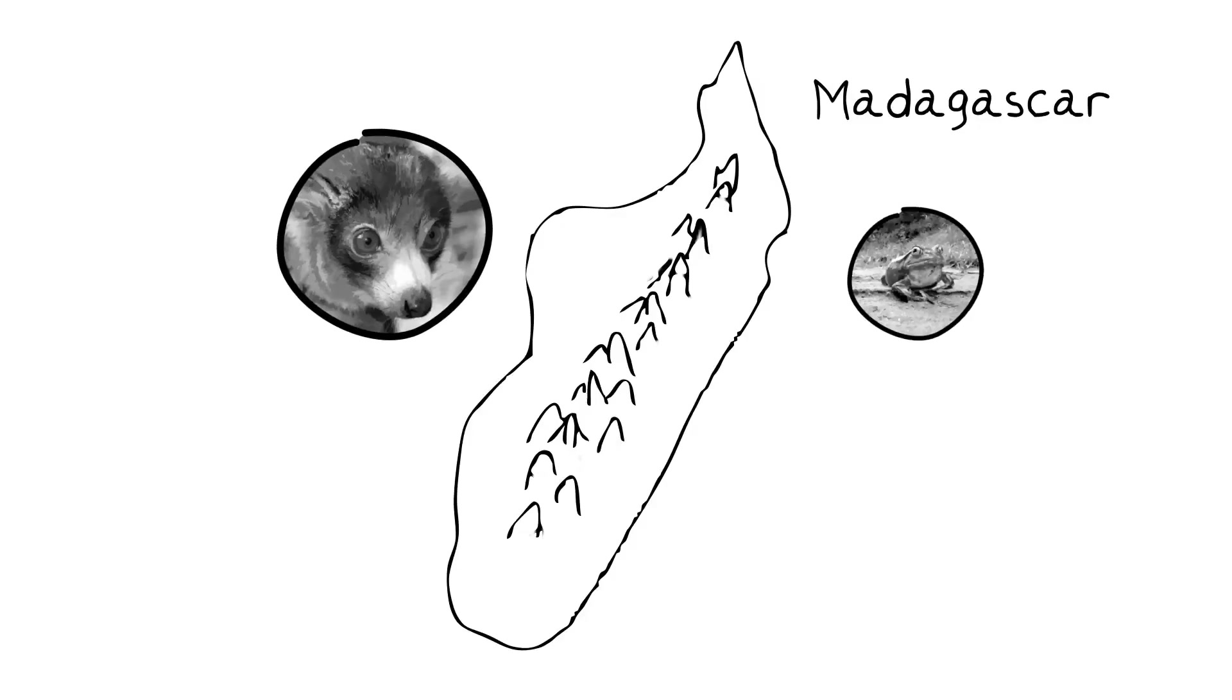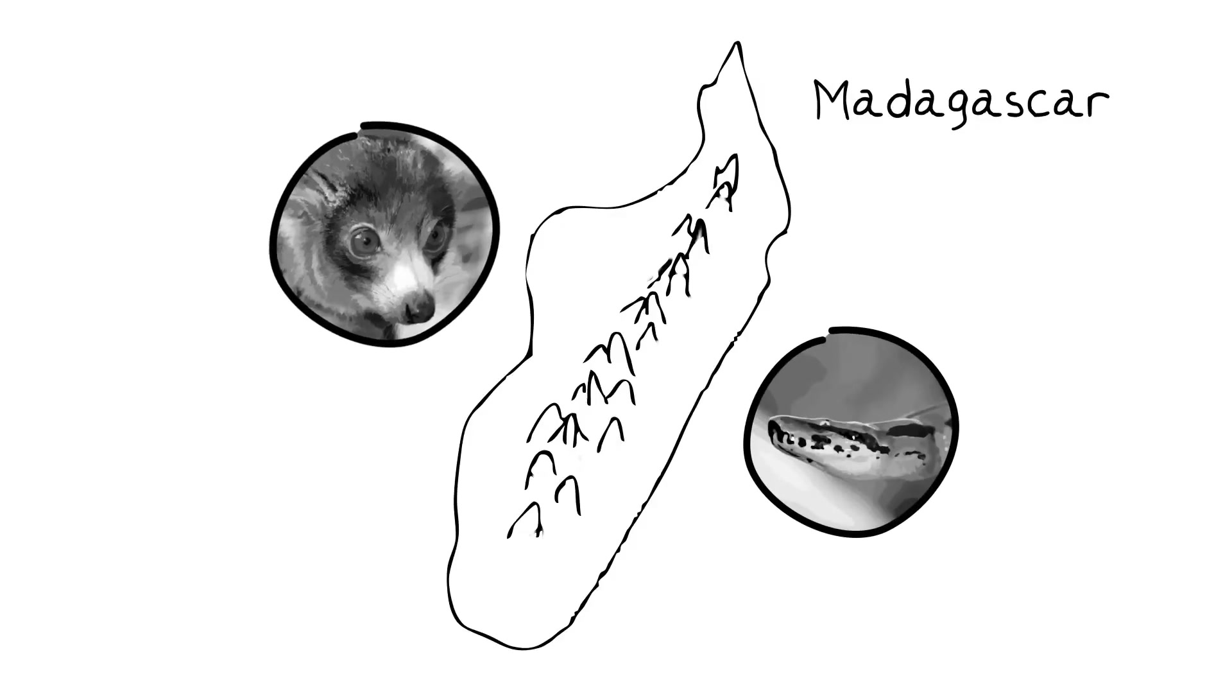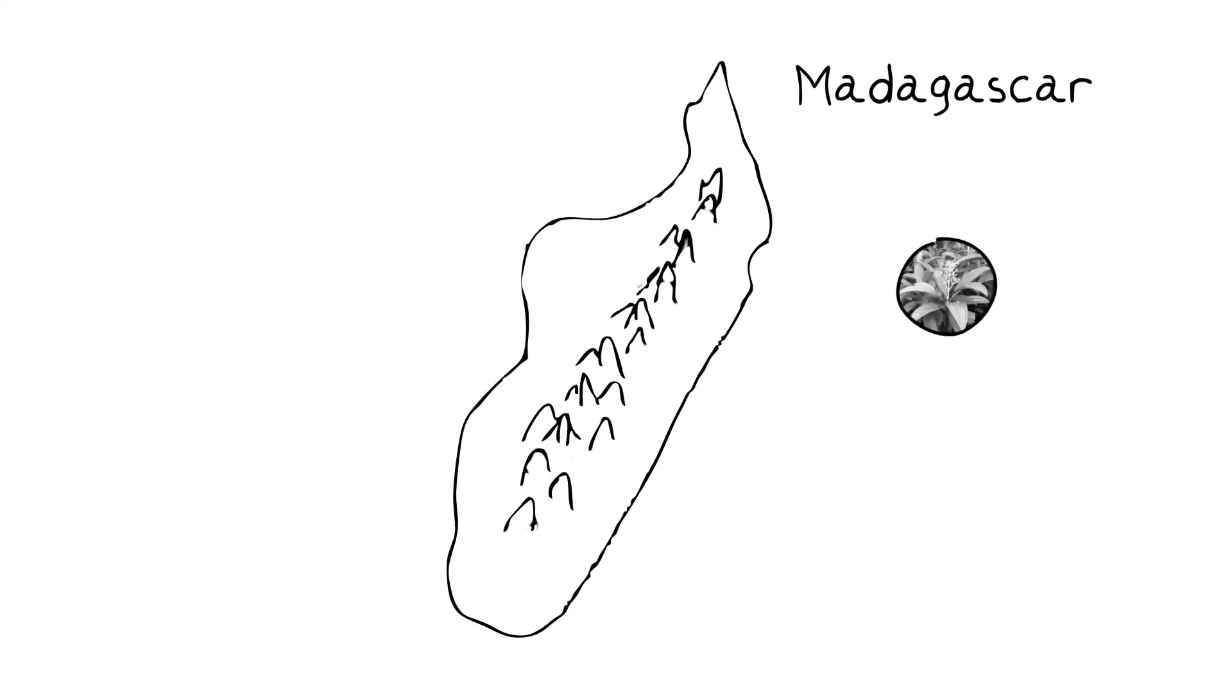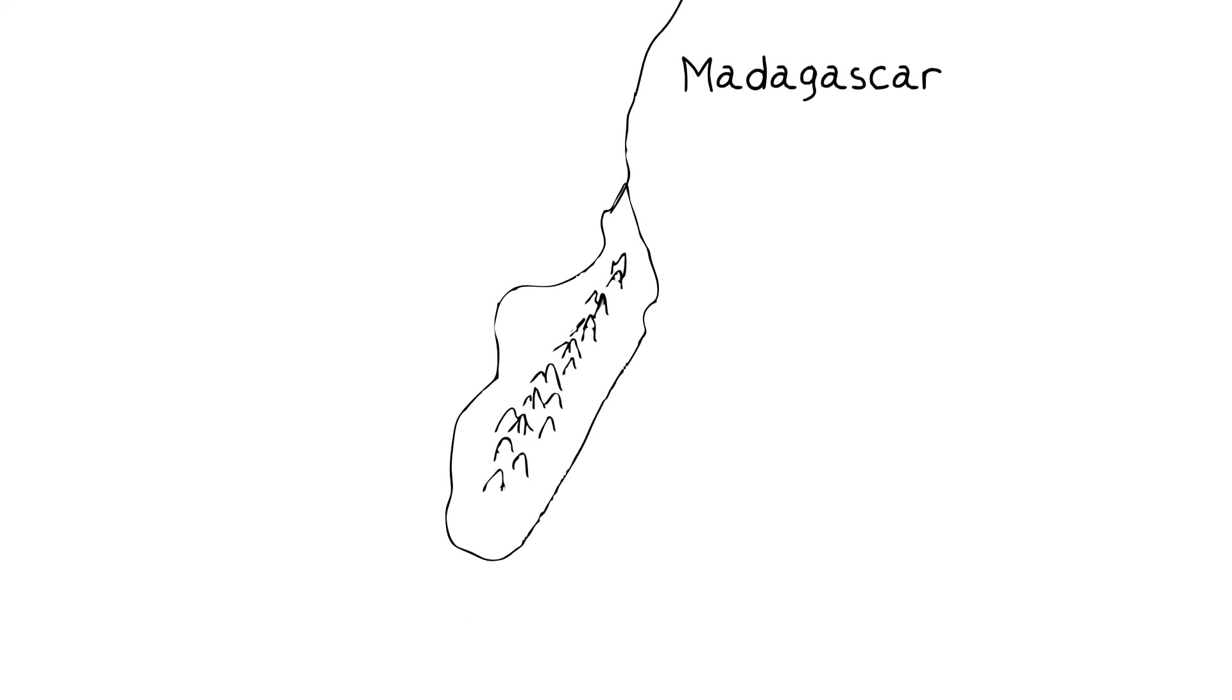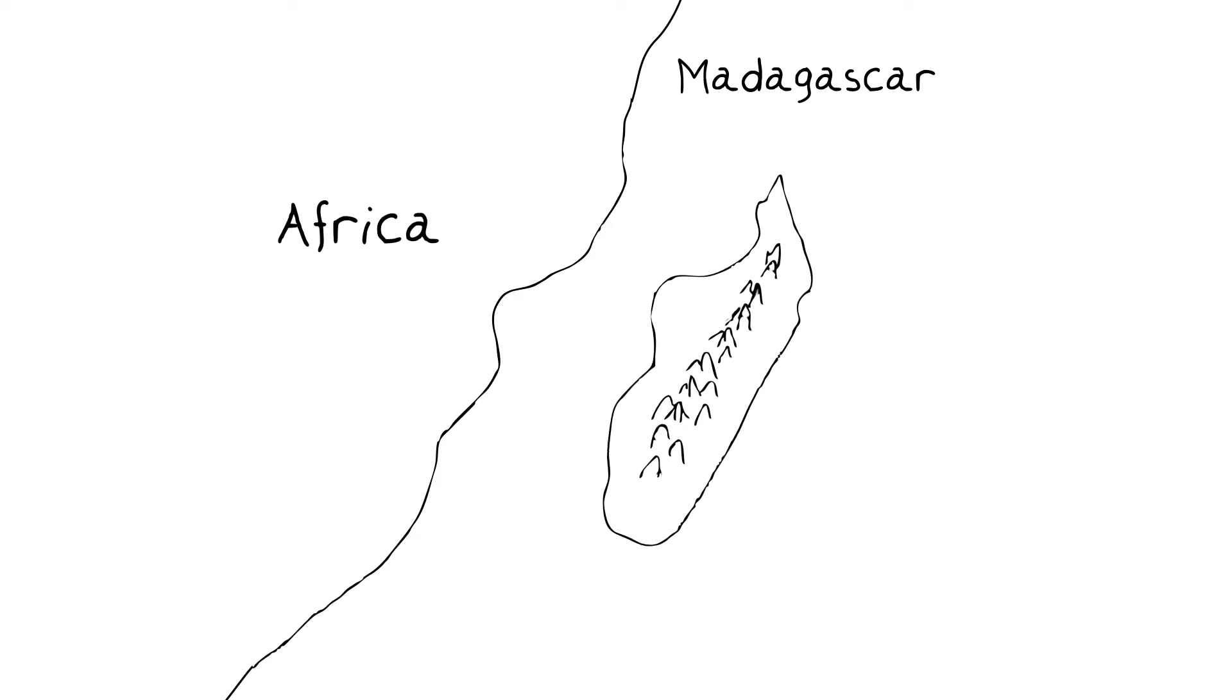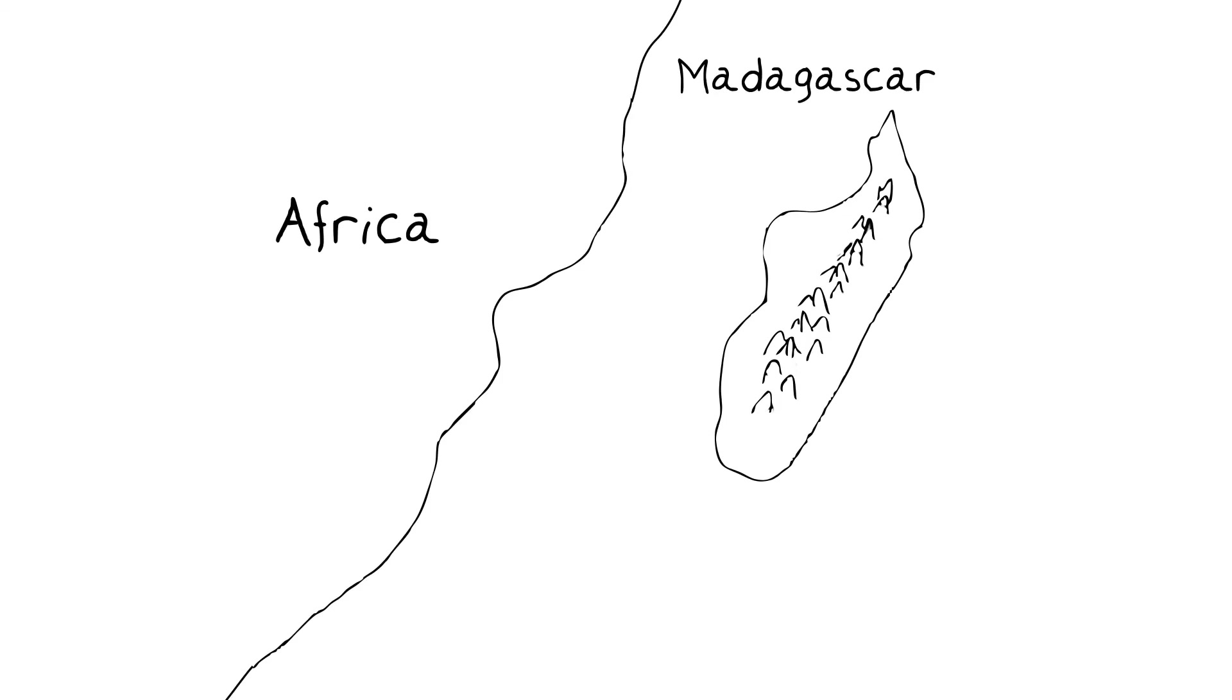Madagascar has lots of endemics, species that arose there and nowhere else. Also, the geologic evidence is strong that Madagascar broke free from Africa in the past, carrying with it subsets of species that existed on Africa and then continued to diverge and evolve on Madagascar.